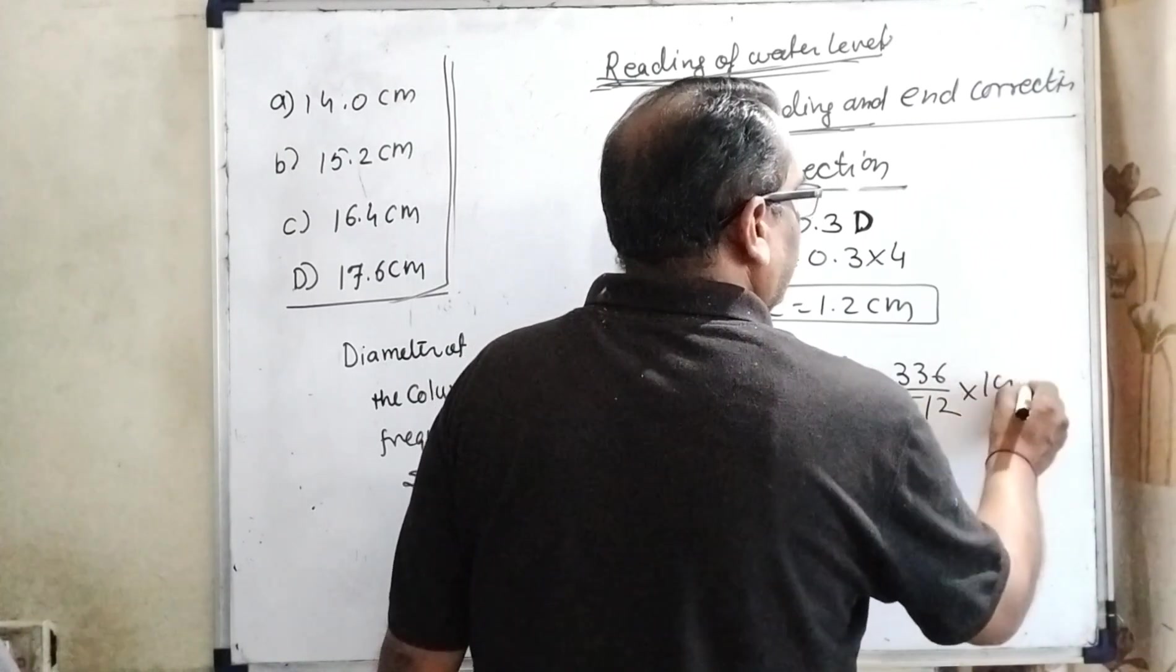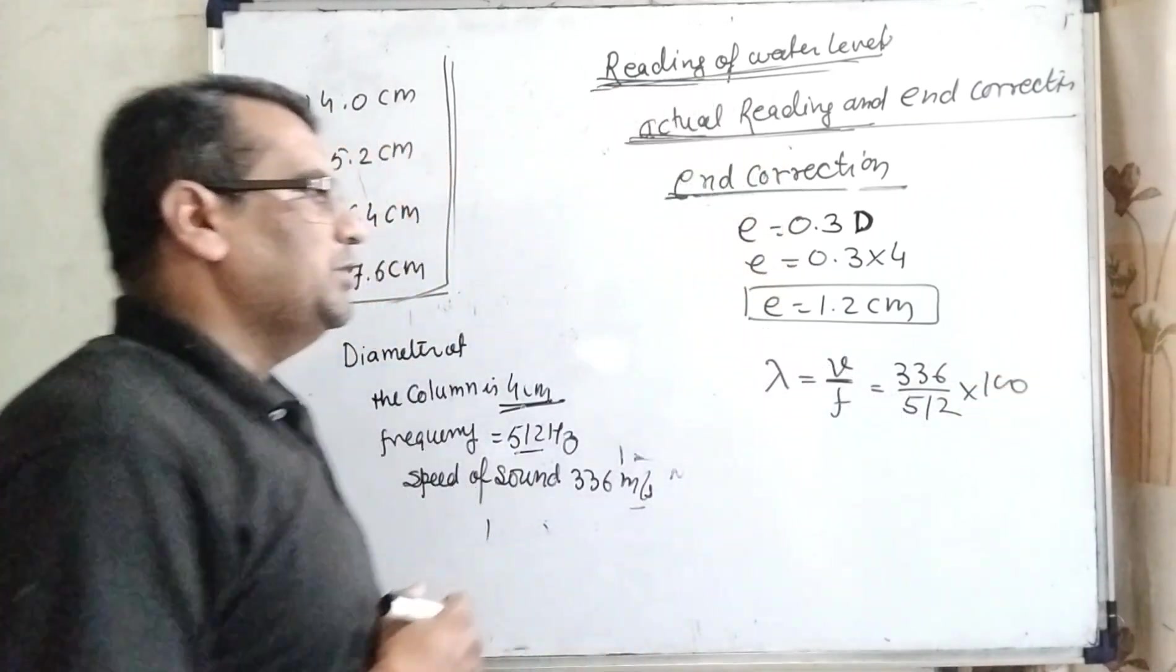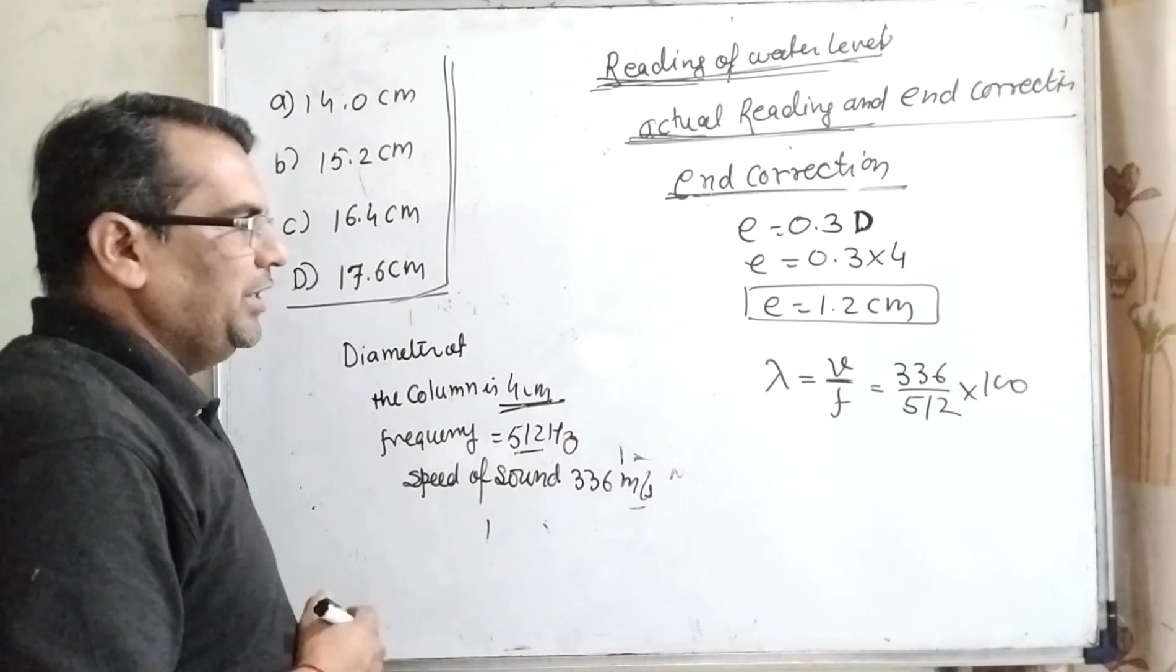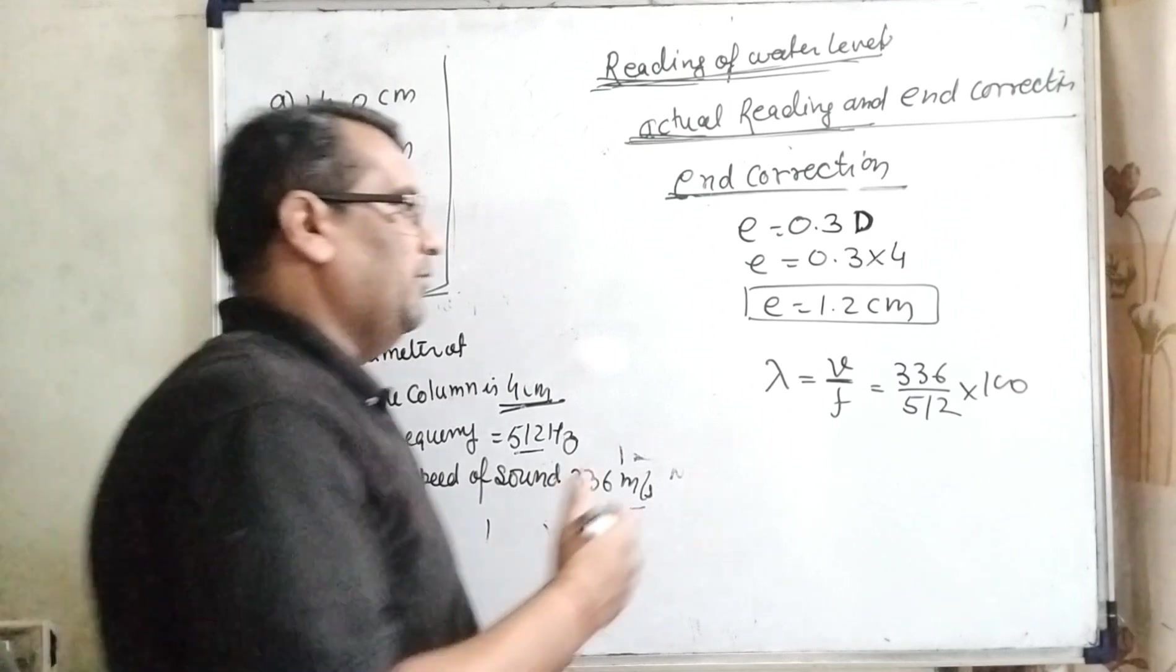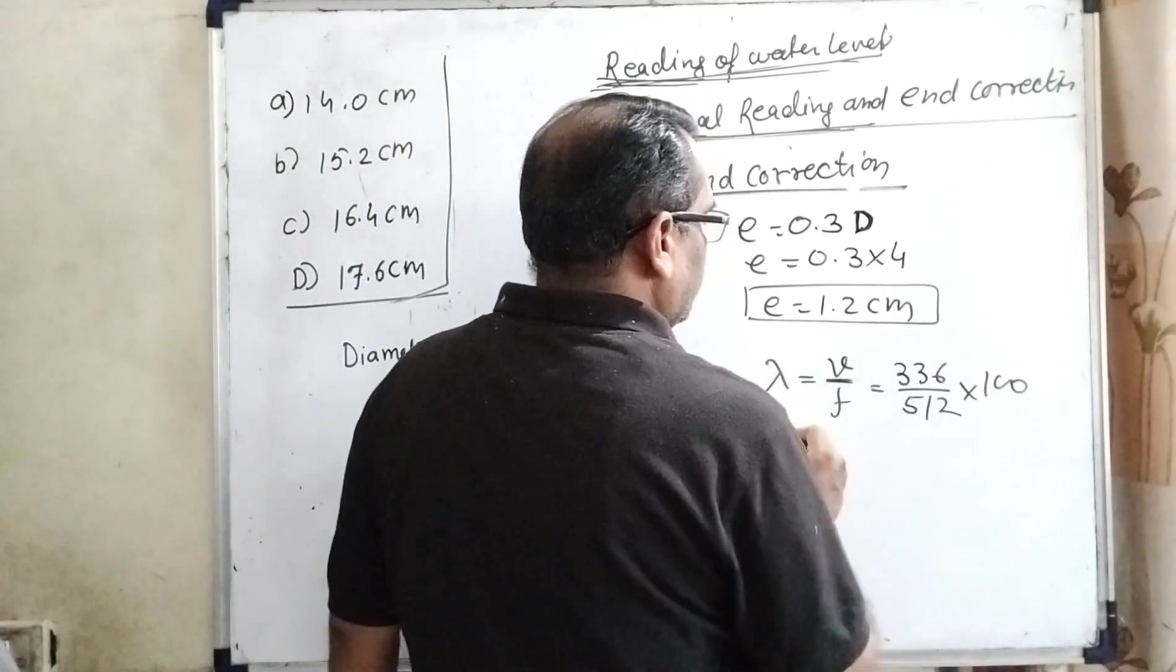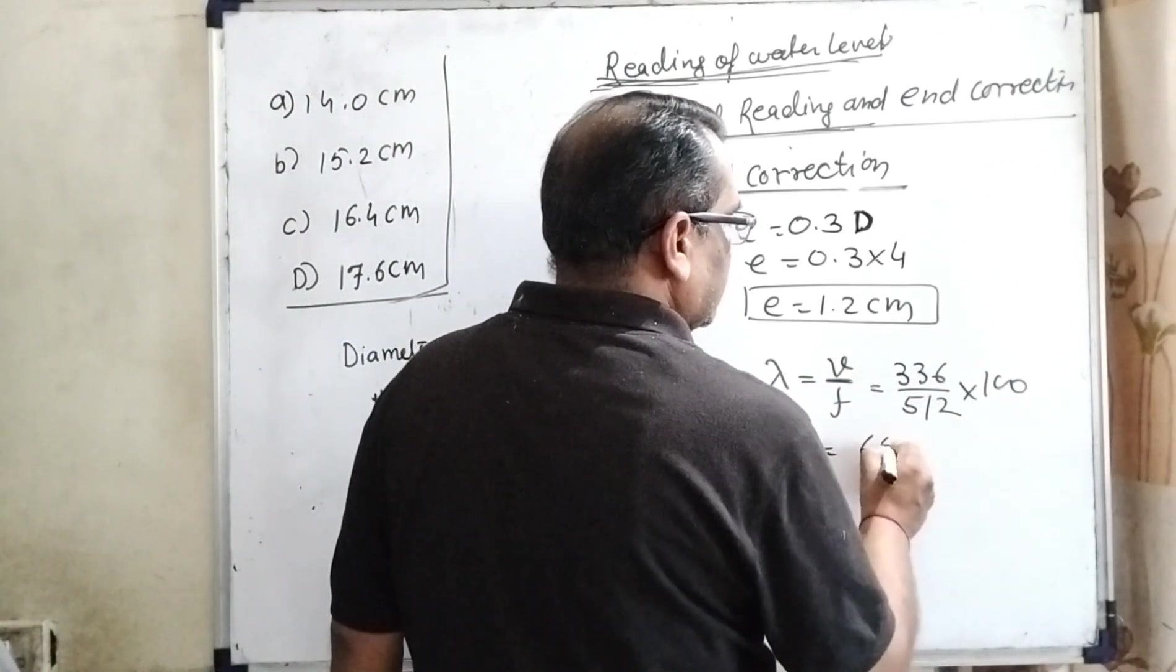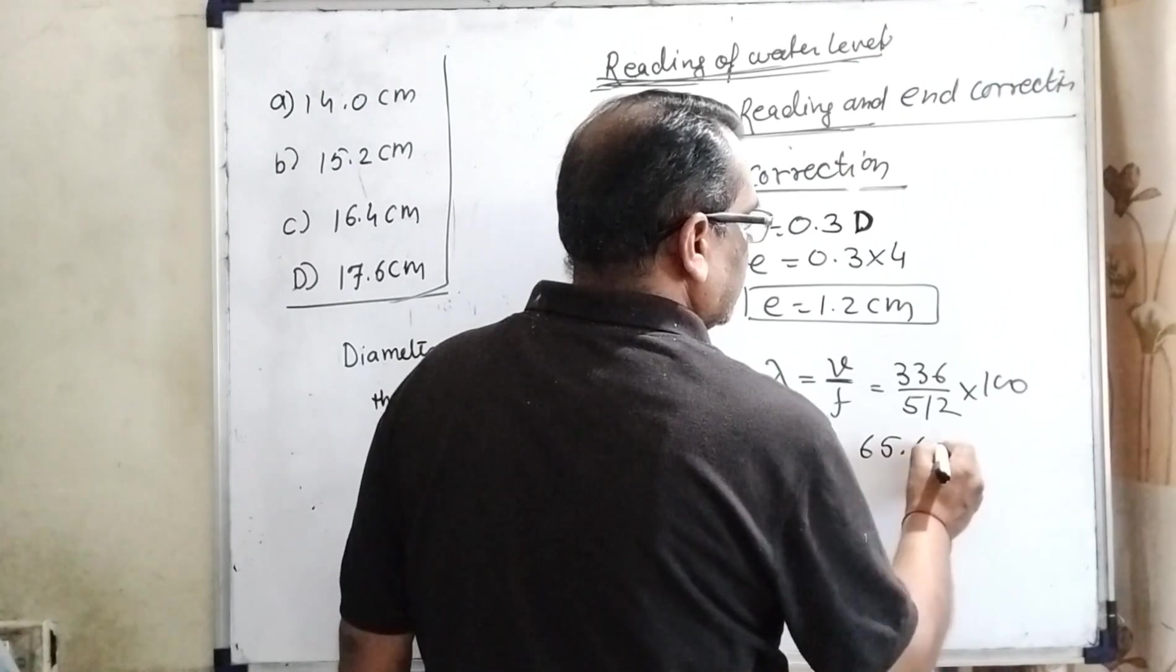Then multiply by 100 to convert meters into centimeters. Why do we need to convert? Because all the values are given in centimeters in our options. So therefore, we convert into centimeters. Then its value is 65.6 cm.